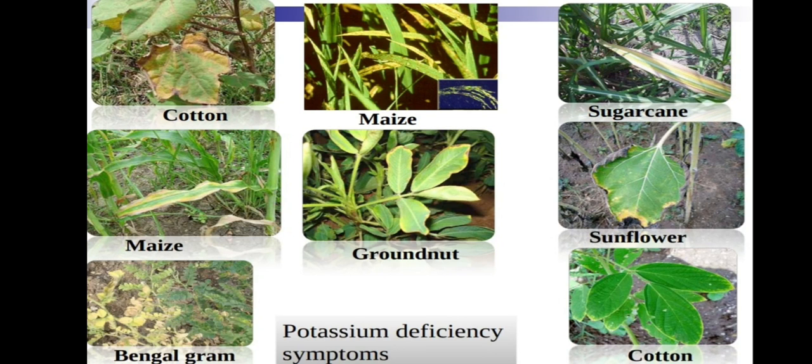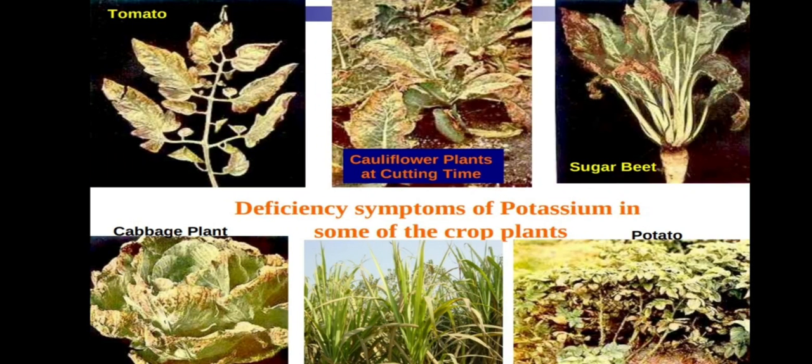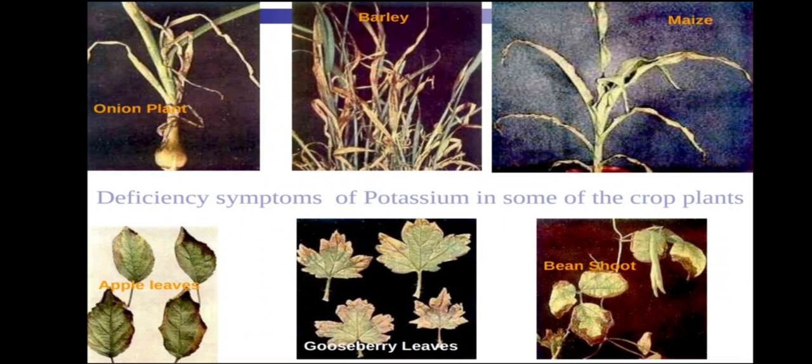Potassium deficiency is also visible in tomato, cauliflower plants at cutting time, sugar beet, potato, onion, barley, maize, apple leaves, gooseberry leaves, and bean shoots.